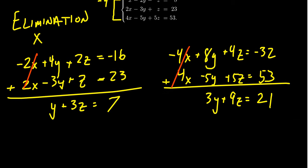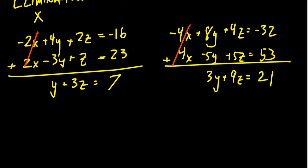And so by eliminating x you have to do two different pairs of equations. We did the first and the second, we did the first and the third. You could also do the second and the third if you want to but we only need two pairs to make this work. And so when we put these equations together now we have a new system of equations that only involves y and z. So we get y plus three z is equal to seven and we're going to get three y plus nine z is equal to 21.